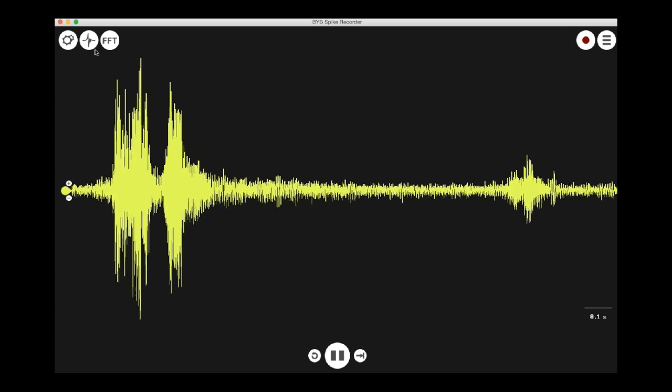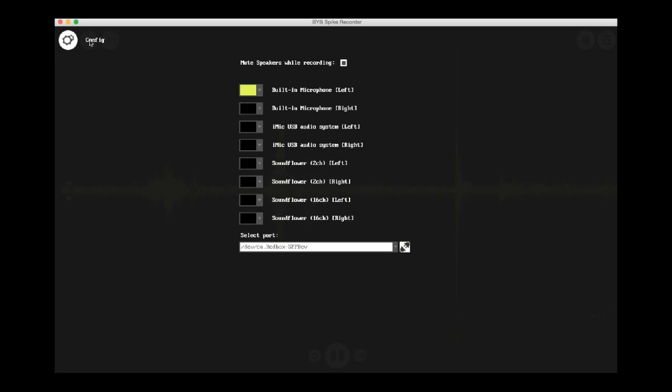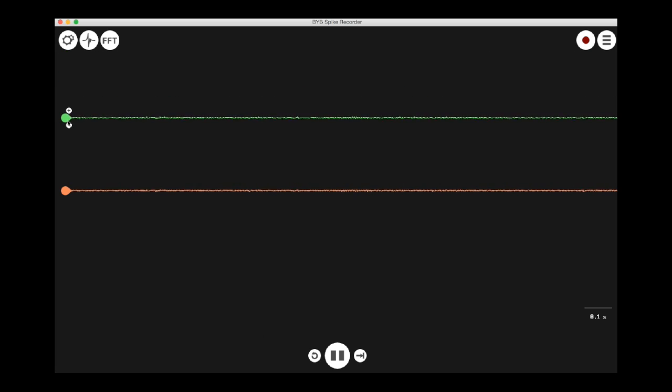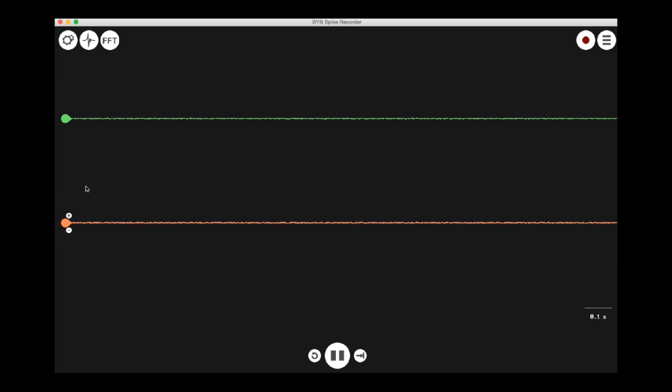Now we need to tell the spike recorder software to recognize the two USB sound card channels, so first we are going to unmute the speakers so we can hear the recordings while we are doing them. Turn off the microphone port, and turn on the two iMic sound card channels. Move your traces so you can easily see them, and turn your spiker box on.